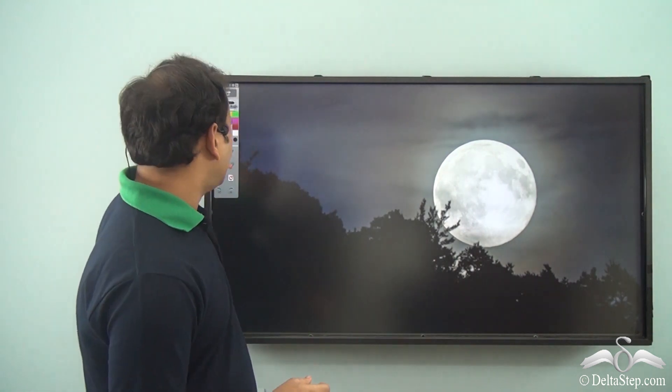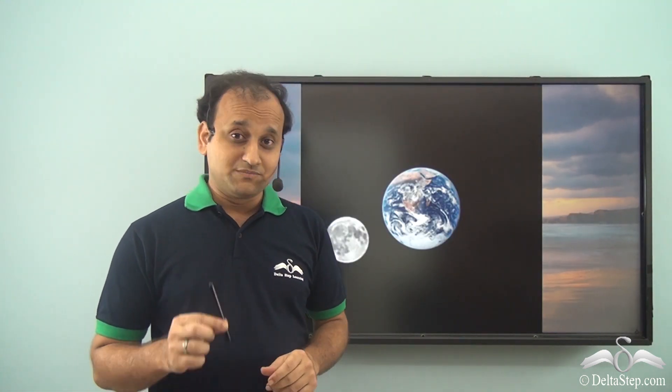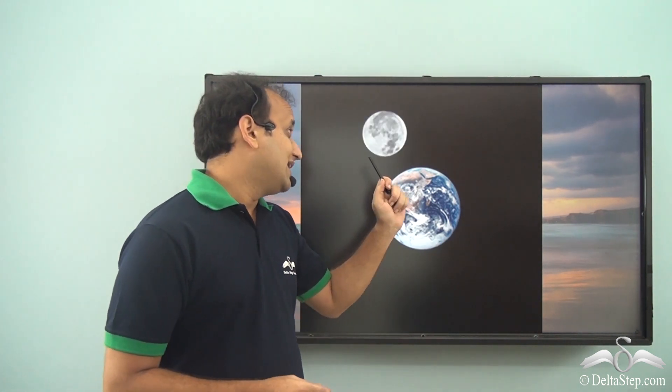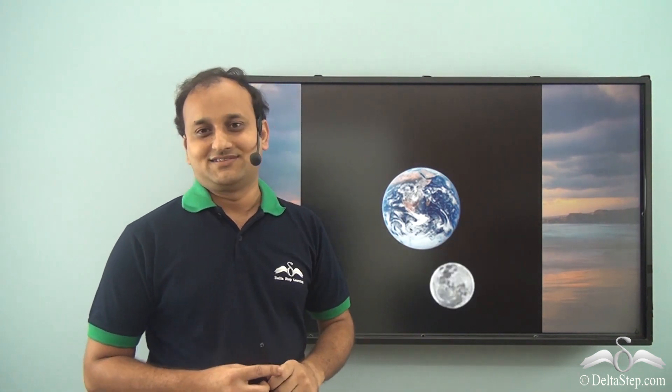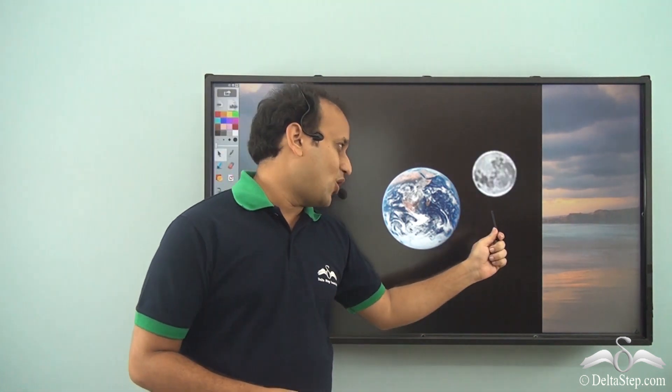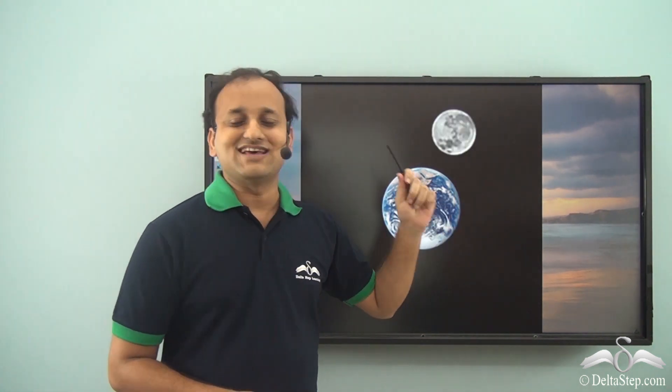But what exactly is a satellite? When something in space revolves around a bigger object, then that smaller object which is revolving around the bigger object is called the satellite of the bigger object. The Moon always revolves around Earth, and that's why it's called a satellite of Earth.